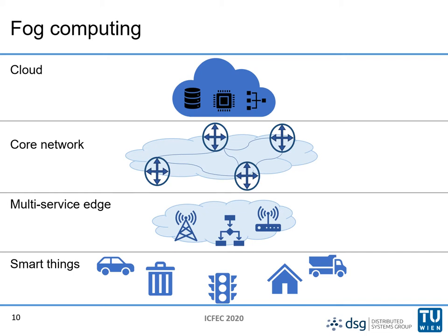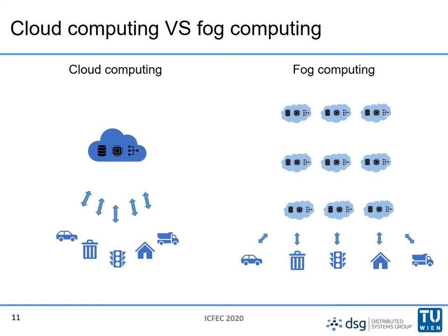By using all these resources, the smart things can communicate using nodes in proximity, and therefore we don't have a huge number of devices communicating with one centralized cloud node. This can avoid having bottlenecks and increased latency. So in contrast to cloud computing, which is centralized, in fog computing there can be many different compute nodes.